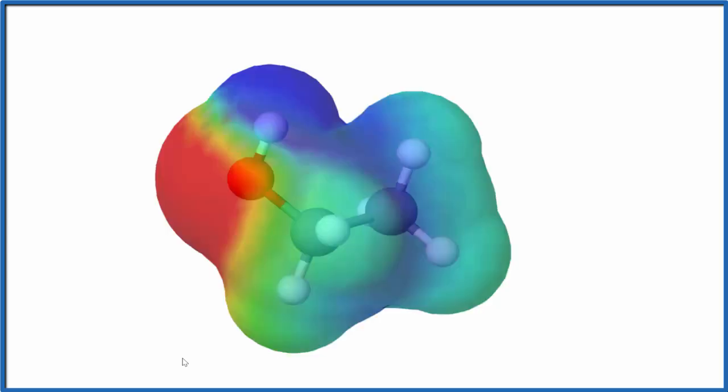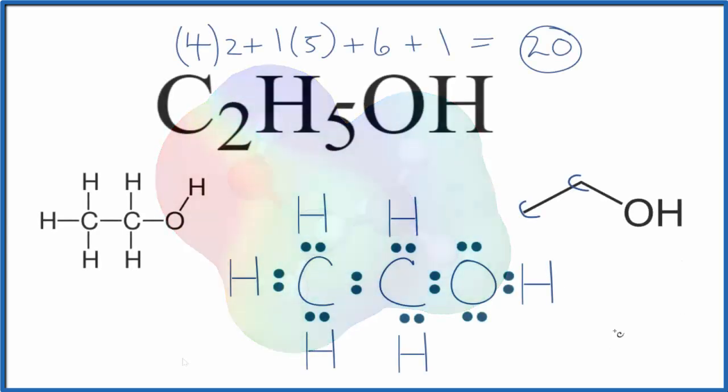For example, it'll dissolve in another polar solvent like water. So this is our Lewis structure for C2H5OH.